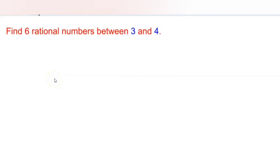Hello everyone. Today let us learn how to find rational numbers between any two given rational numbers. For example, let us find six rational numbers between three and four.